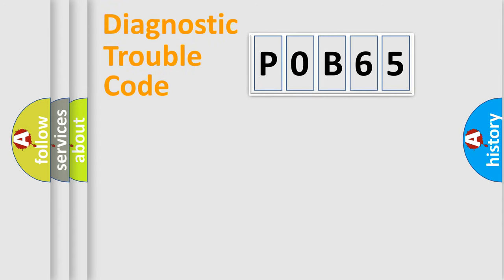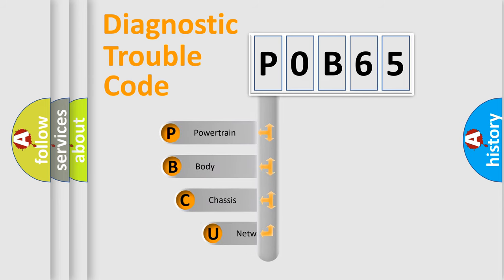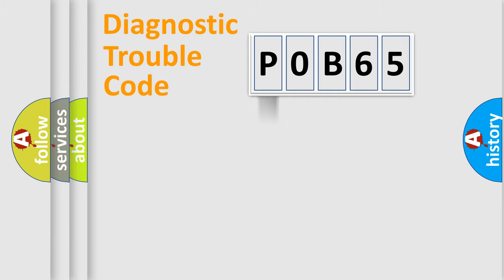First, let's look at the history of diagnostic fault code composition according to the OBD2 protocol, which is unified for all automakers since 2000. We divide the electric system of an automobile into four basic units: Powertrain, Body, Chassis, and Network.